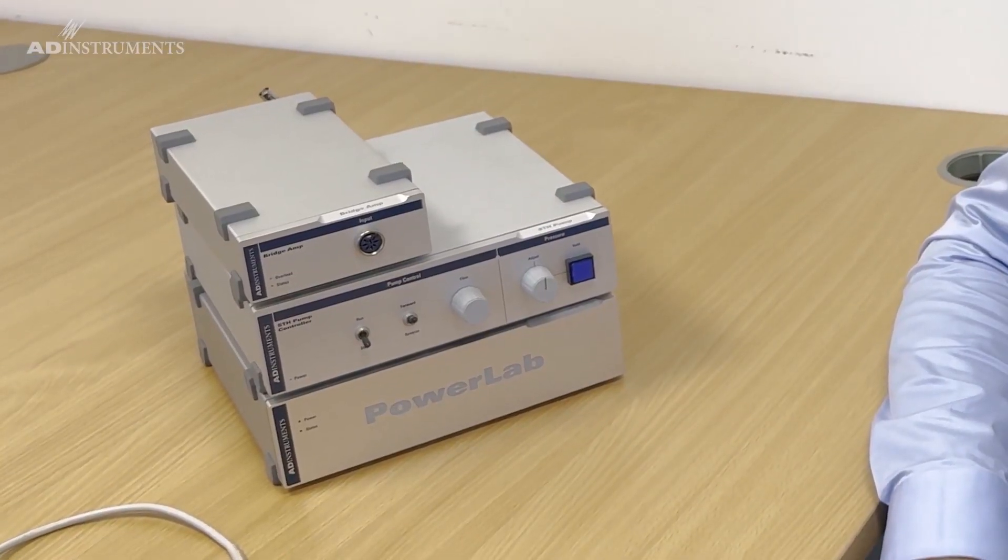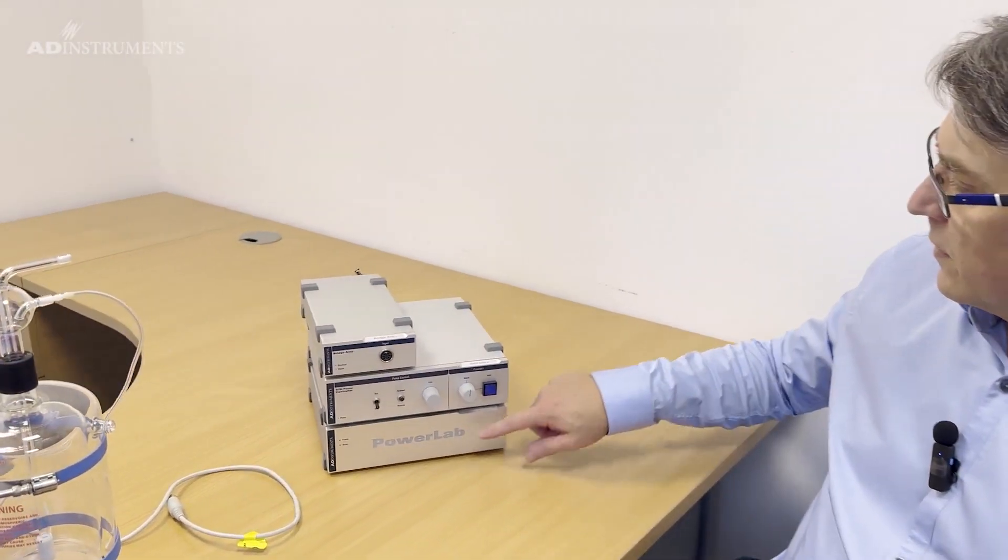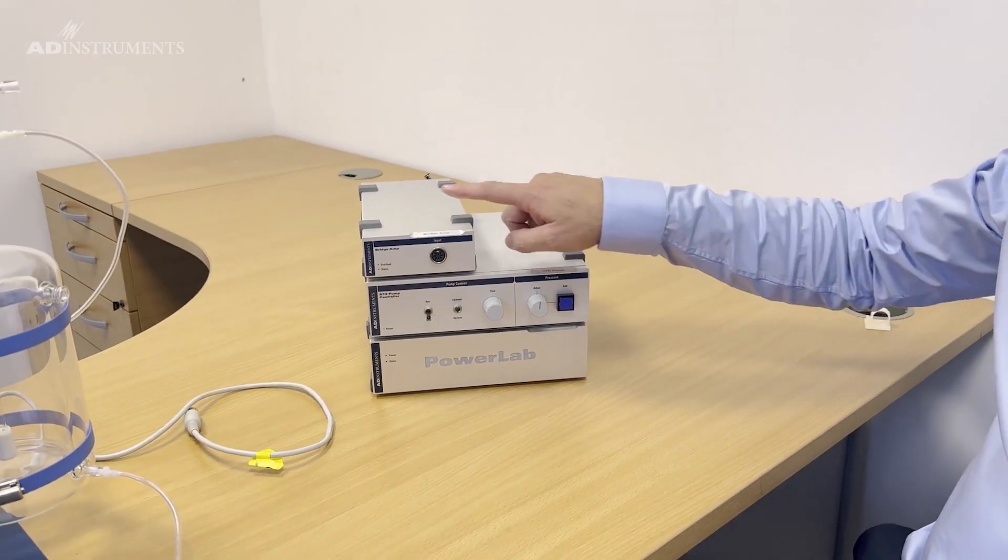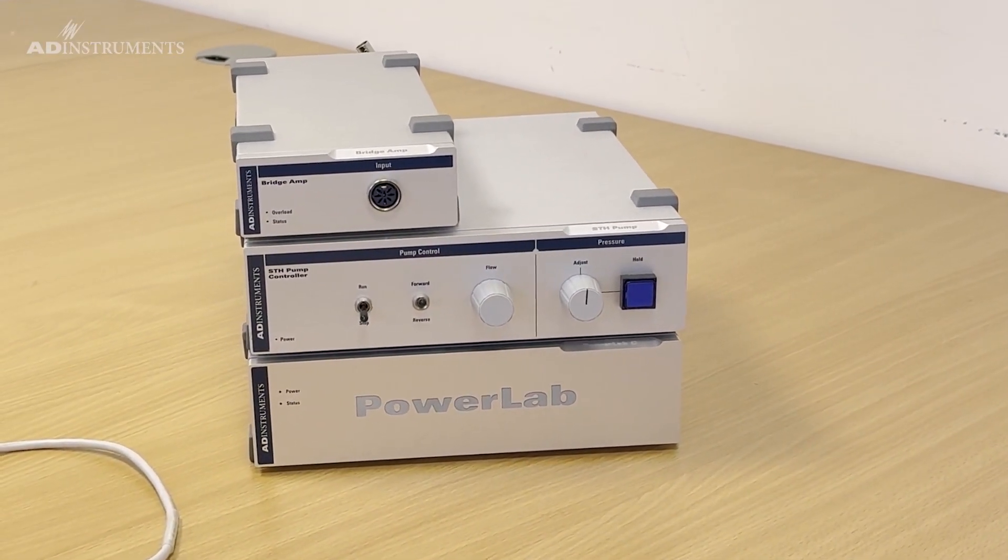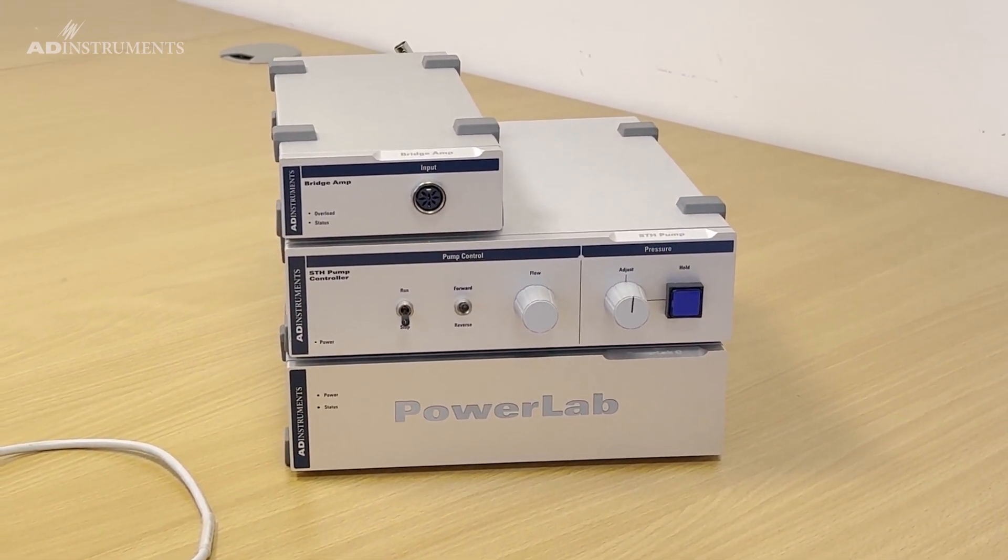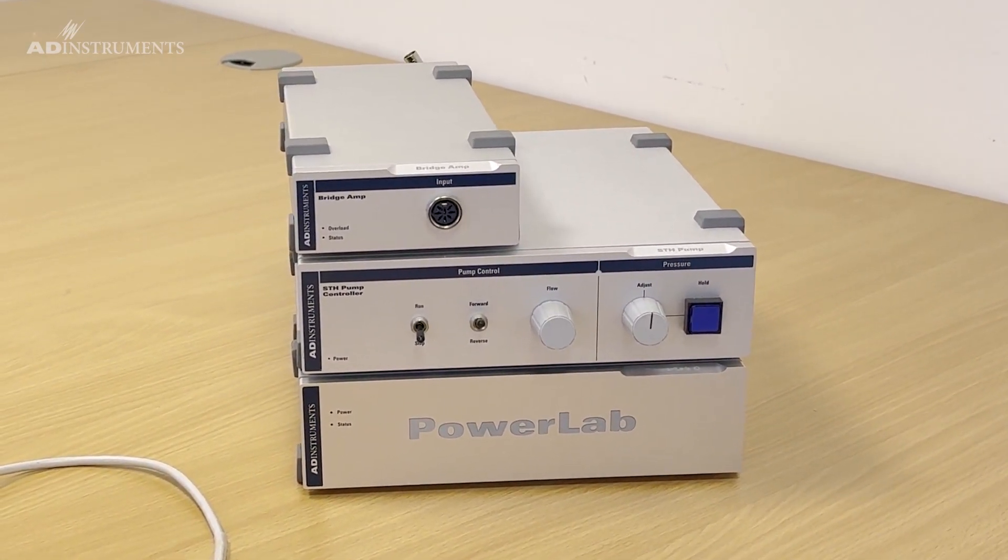Next we'll be looking at setting up the hardware to measure and control the pressure and flow in the system. For this we need a PowerLab, the STH pump controller and the bridge amp. If you would like to record other parameters like ECG or left ventricular developed pressure you're going to require additional hardware.